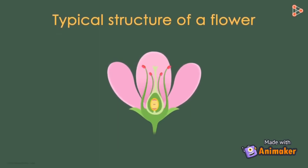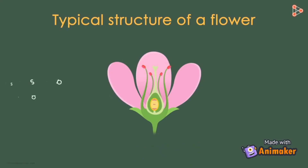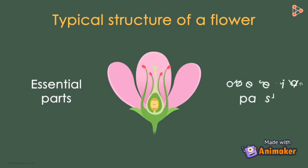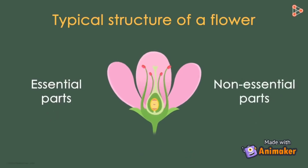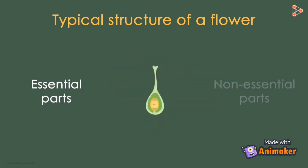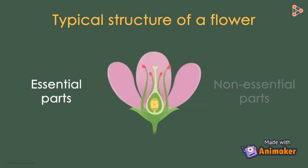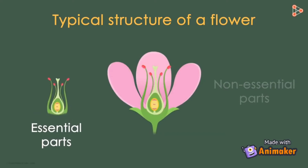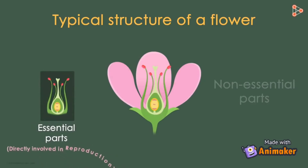A flower has mainly two components. Every flower is composed of two parts: the essential and the non-essential parts. The parts of a flower such as the stamen and the pistil, which are the reproductive parts, are the essential parts. These are essential because they are directly involved in the process of reproduction.